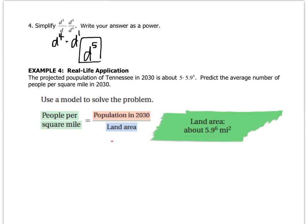And last one together is example 4. The projected population of Tennessee in 2030 is 5 times 5.9 to the 8th. Predict the average number of people per square mile in 2030. So they've given us the setup. So even if you don't know what to do, you can at least plug in what you know.